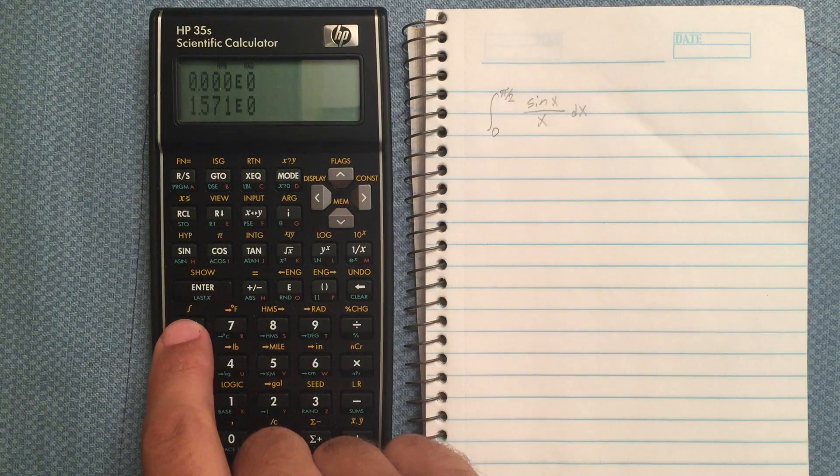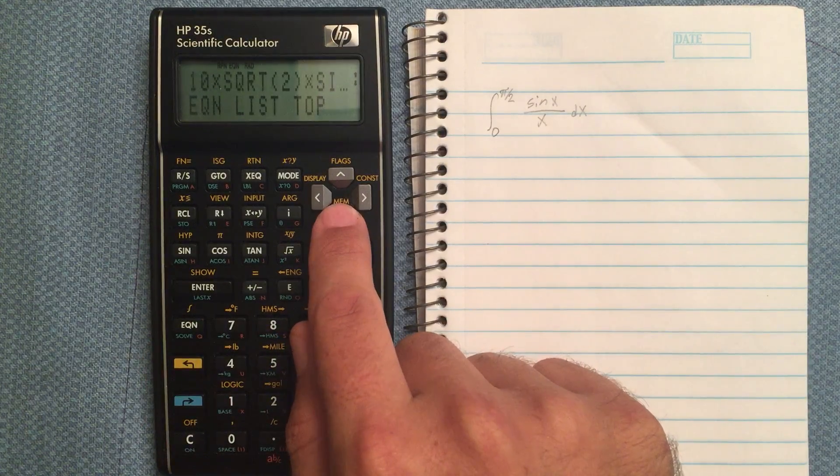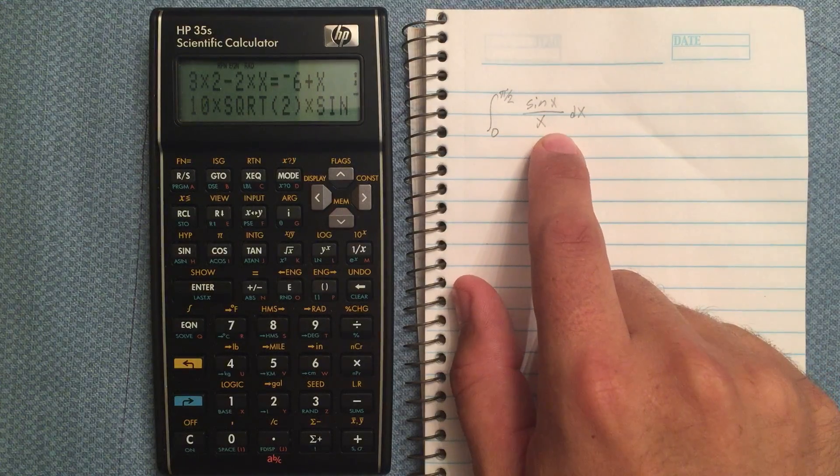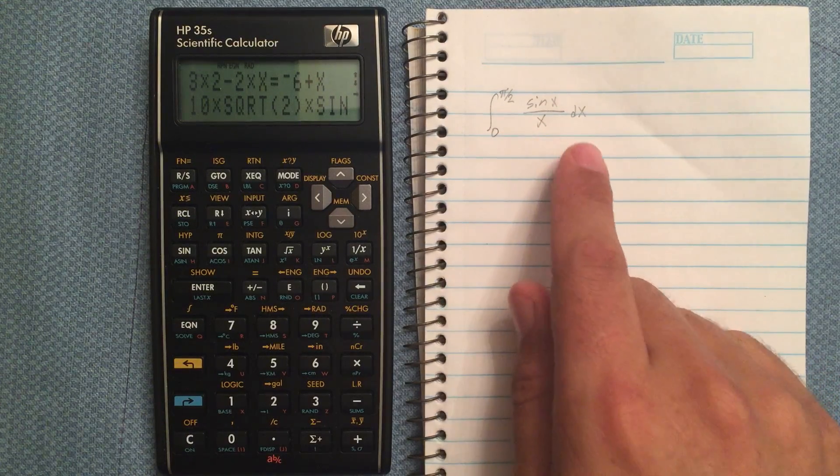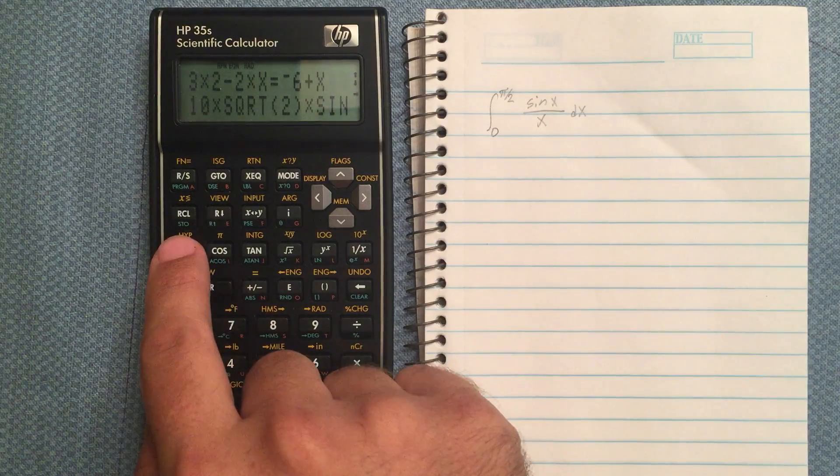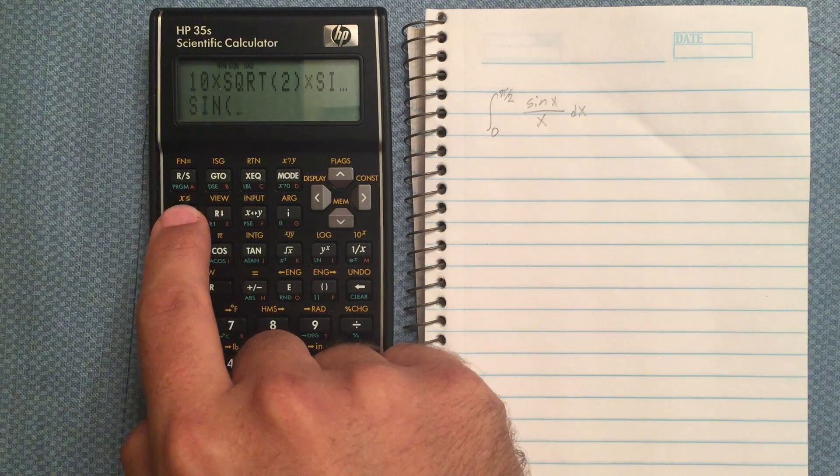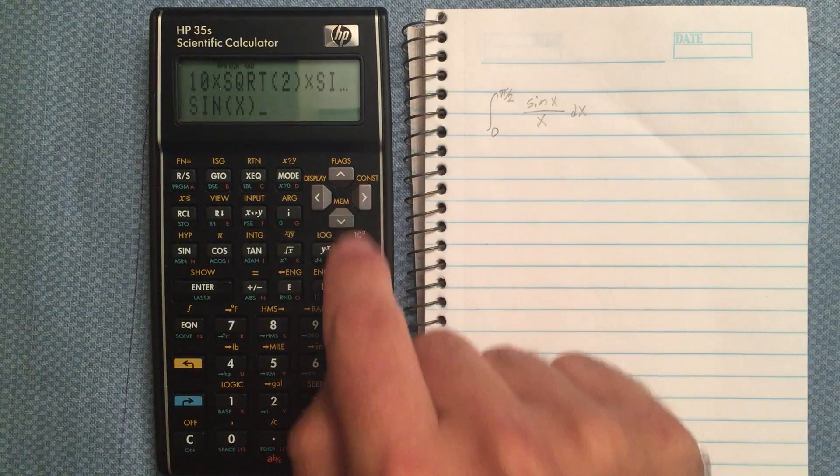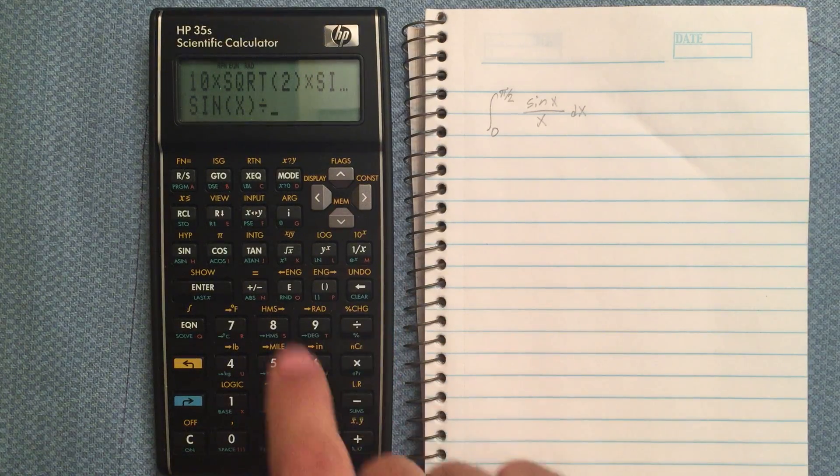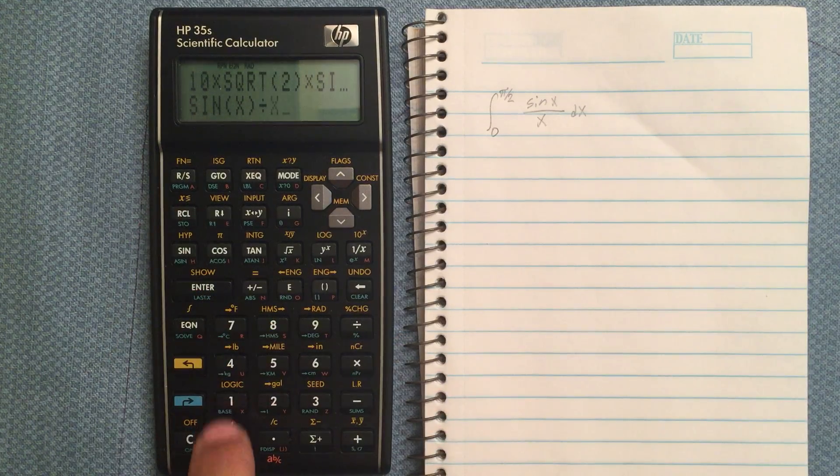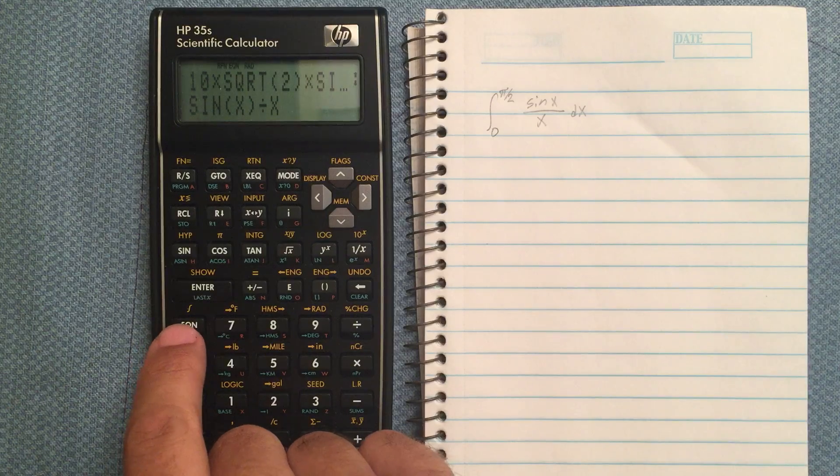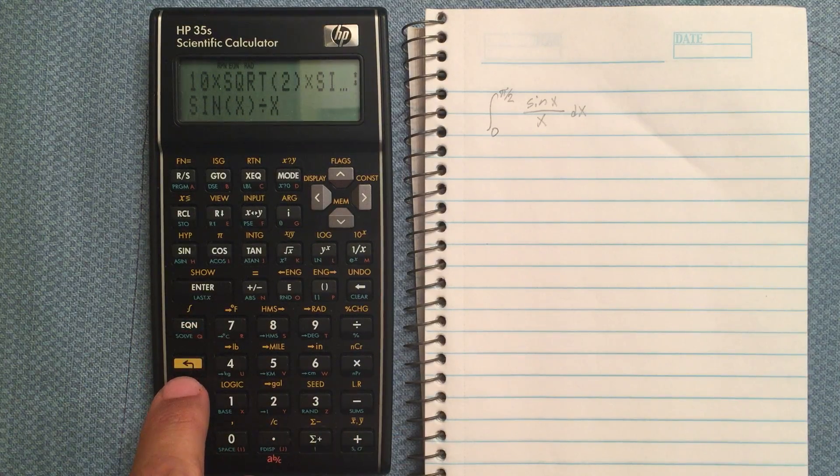And then go into equation mode, and here I've got several equations entered in, but we're going to enter in this equation sine x over x. Do sine and then recall, and the x label is down here, recall x, divided by, and again recall x and enter. The integral sign is over the equation button.